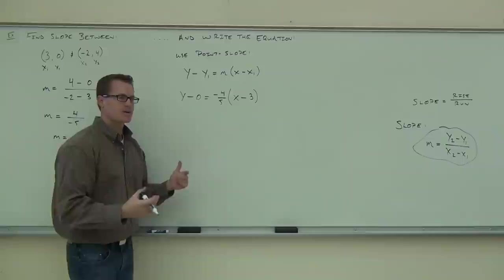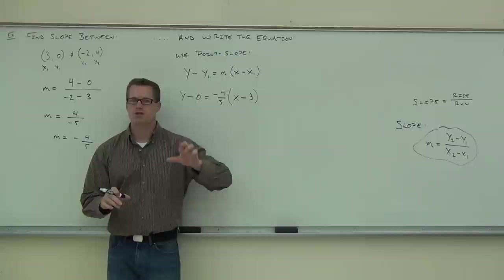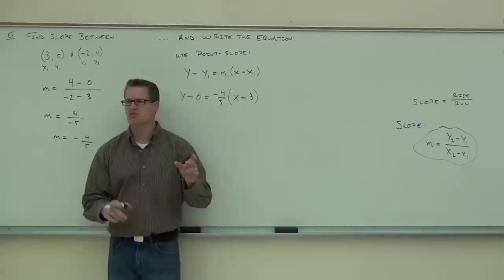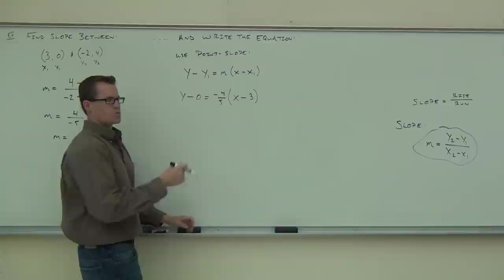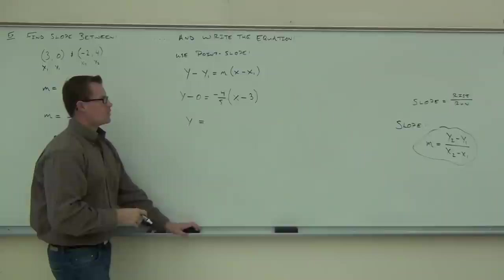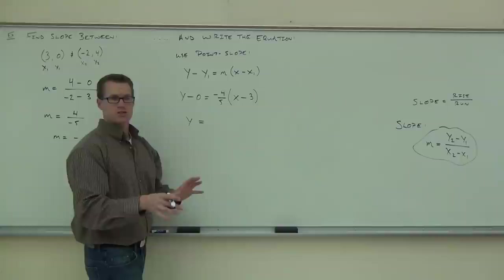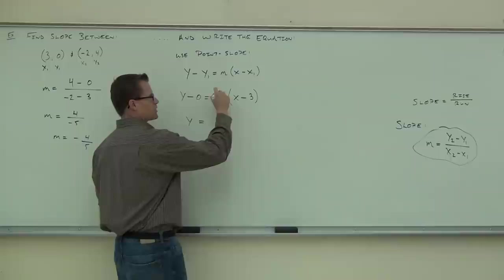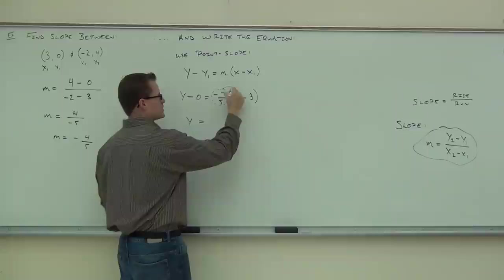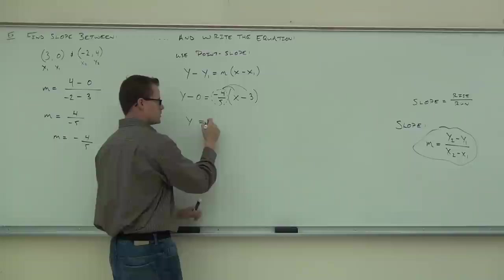Now we do some simple math. What we're going to try to do is take this from point-slope and get it into slope-intercept. The reason is because slope-intercept is generally easy to graph — we'd like to go to the intercept and use the slope to find the next point. So y minus zero equals y. We need to distribute: take the number outside the parentheses and distribute it into both terms. Negative four-fifths times x gives you negative four-fifths x. The next one: negative four-fifths times negative three — you're going to get a plus. So definitely a plus.